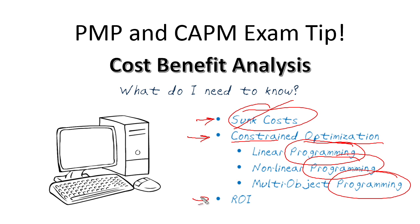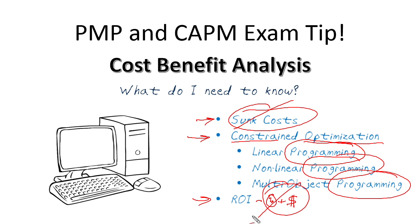The next one is ROI — return on investment. Return on investment is a catchphrase that everyone uses for: if I've invested, what kind of return will I get on it? The one thing about ROI is that it does not consider the time value of money. Time plus money can change the actual value. So ROI does not consider the time value of money — instead, it just says you spent this much, you get this much in return.